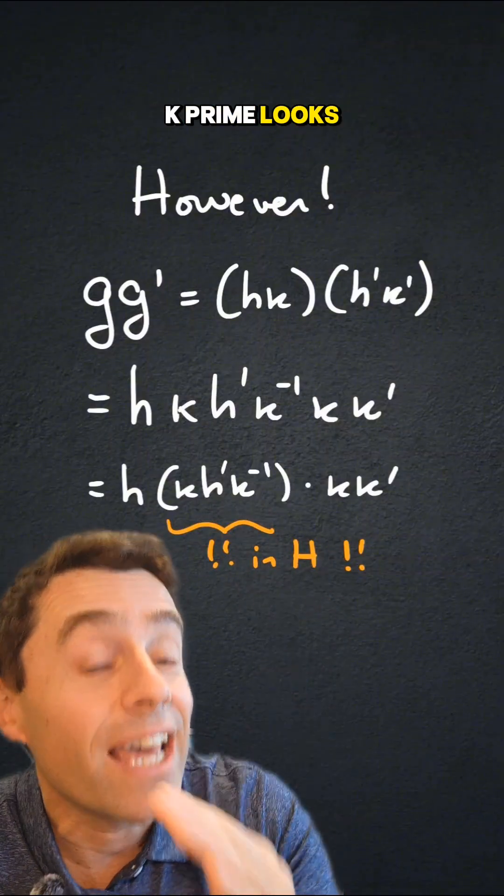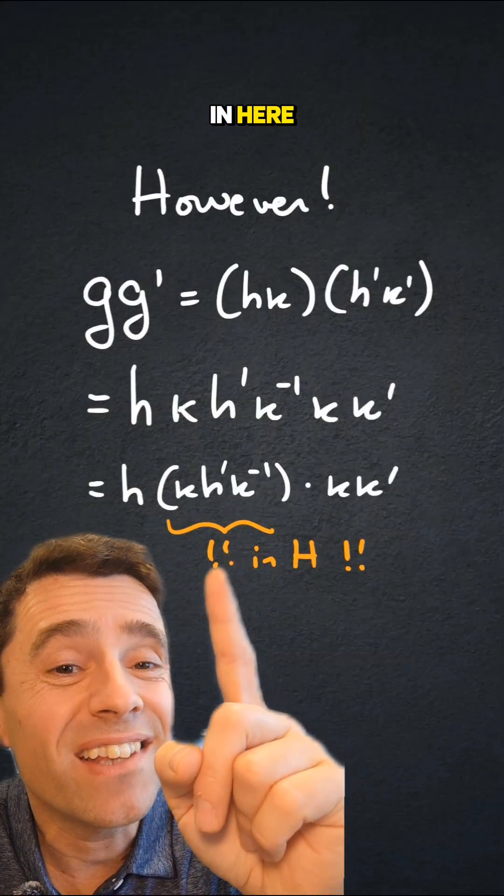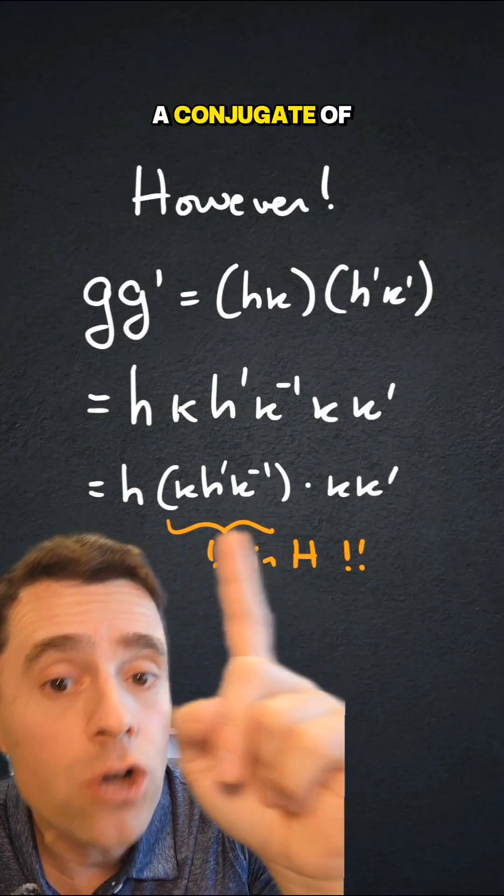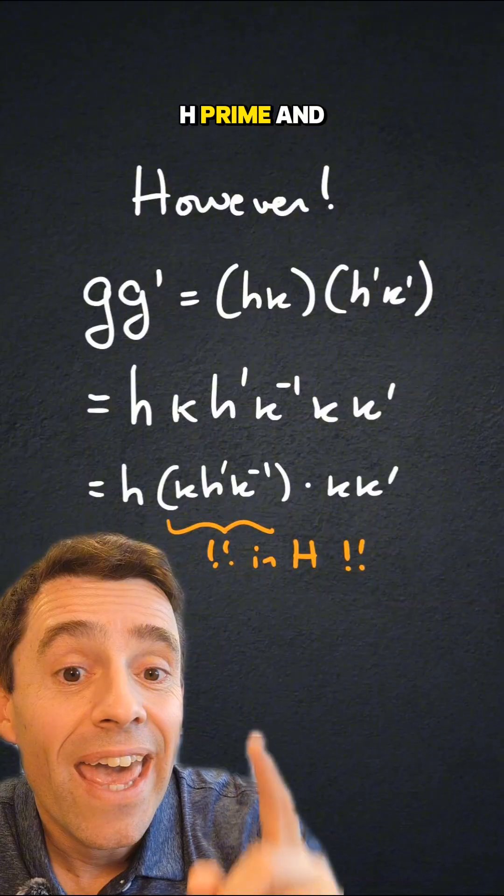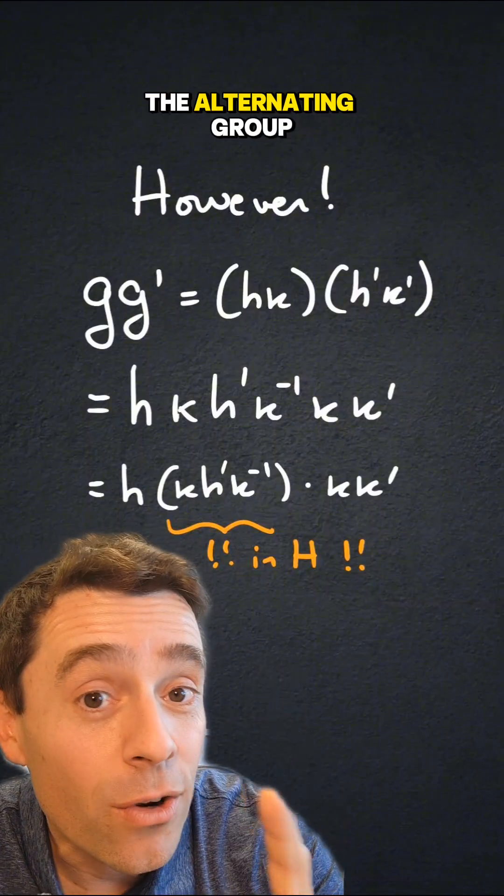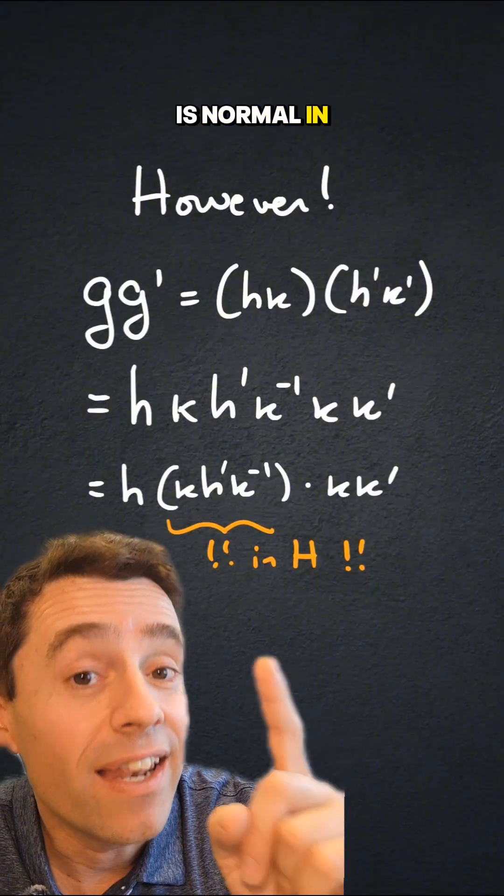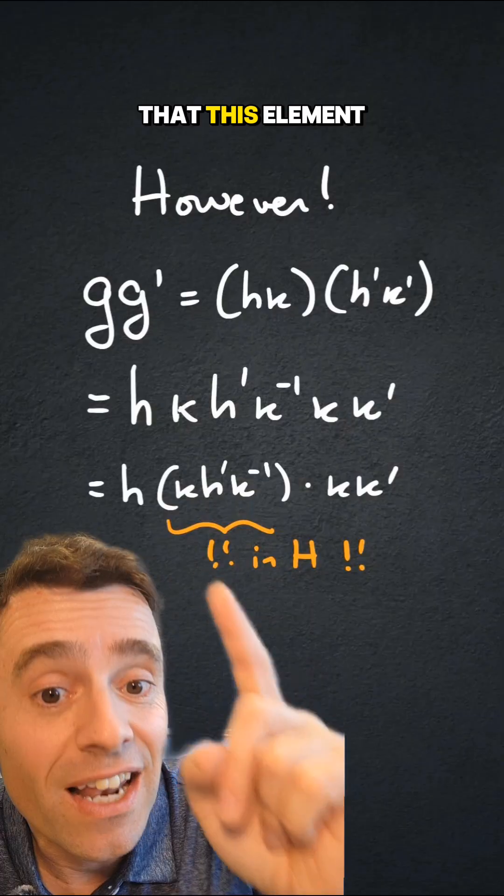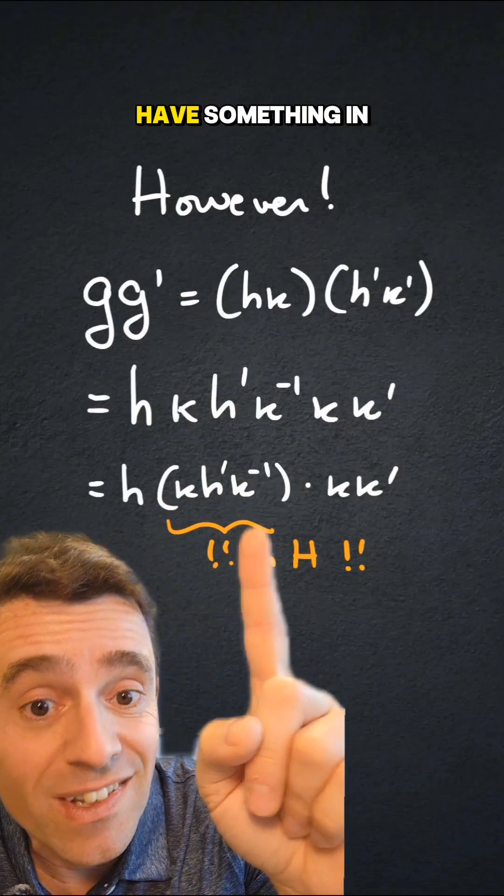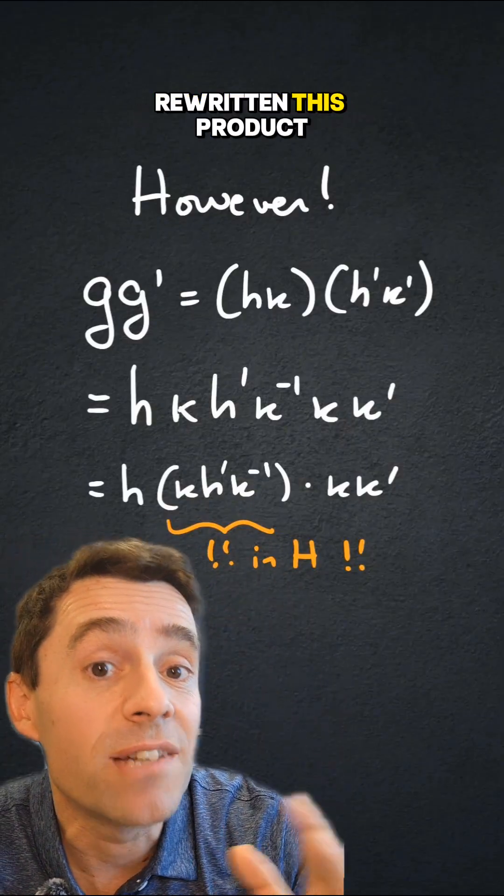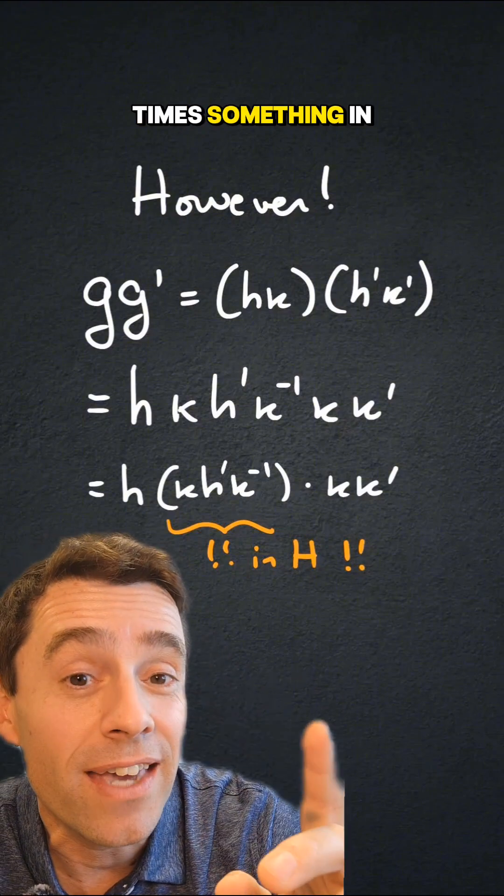So that kk' looks like before, and in here, instead of multiplying by h', I'm multiplying by a conjugate of h' and since h, the alternating group, is normal in s3, it turns out that this element is in h. So I do have something in h times something in k, and I have rewritten this product as something in h times something in k.